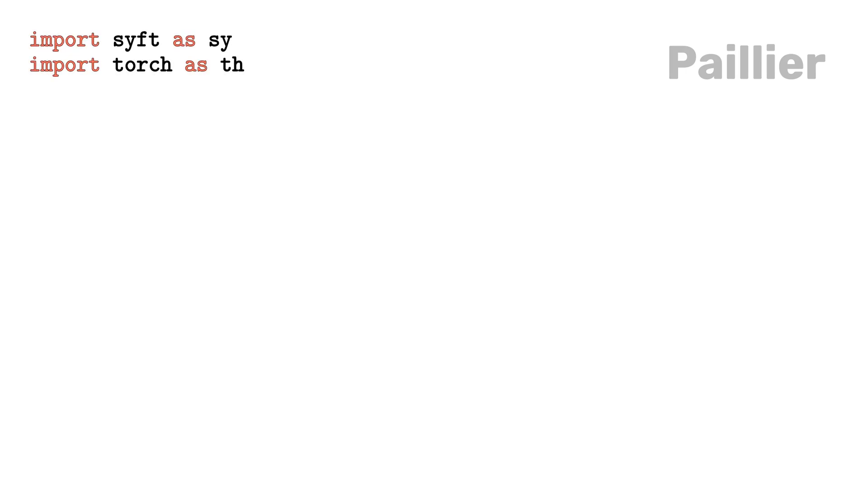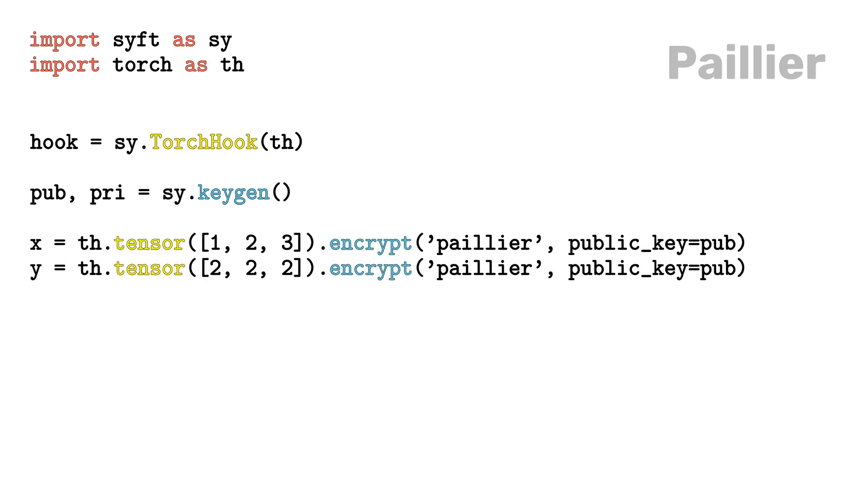For Paillier, we start by importing just Syft and Torch, then we hook Torch to add to the object of this library, like tensors, the functionalities that we need from Syft. After these steps, we generate the public key that we will use for encryption, and the private key that we will use for decryption. At this point, we can initialize and encrypt two tensors, X and Y, and sum them together. This scheme doesn't enable other homomorphic operations, but it is much faster than more complex schemes and has a small overhead. The sum tensor decrypts, of course, to the correct result.